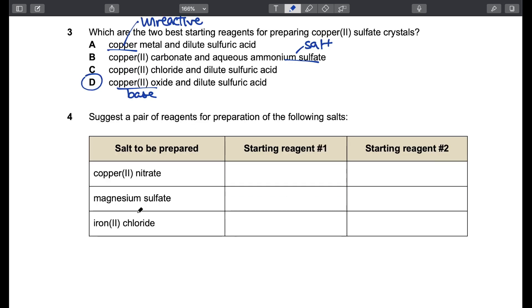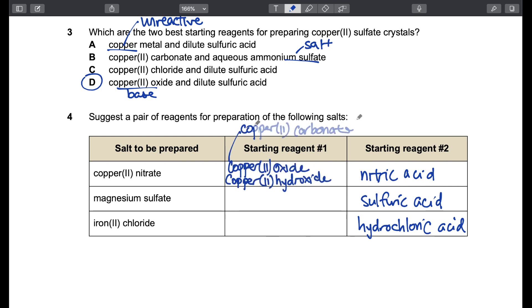When it comes to this matter of salt preparation, the acid that we use depends on the anion of the salt. So when it's nitrate, we use nitric acid. Sulfate, we use sulfuric acid. And chloride, we use hydrochloric acid. There are a few choices here. We can use copper 2 oxide, copper 2 hydroxide, or copper 2 carbonate. They all work as long as they are used in excess. For the second one, I'm just going to write the formula to save space. Metal, base, or carbonate. And for the last one, same thing. We can use the metal, base, or carbonate.